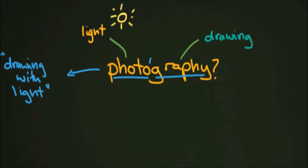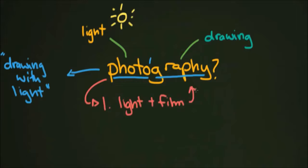What would be a more functional, working definition of photography? I took a quick look in Google and came across a definition in the World English Dictionary. It has two pieces: first, the process of recording images on sensitized material by the action of light, x-rays, etc. And second, the chemical processing of this material to produce a print, a slide, or a cinefilm. So basically: light plus film equals photography.